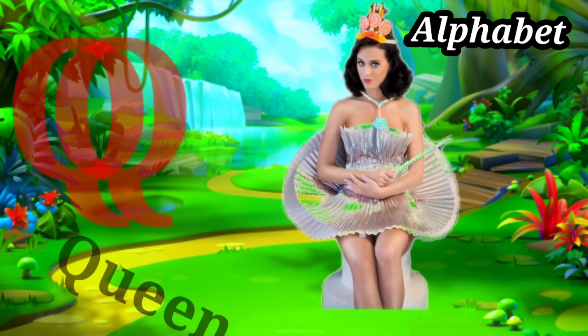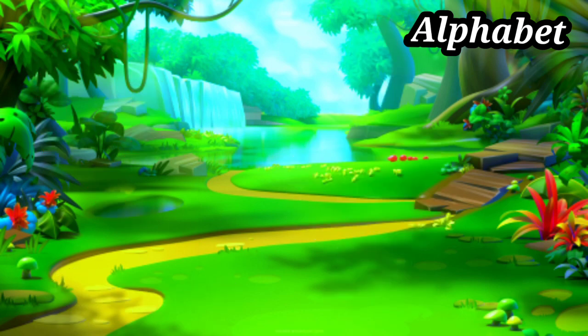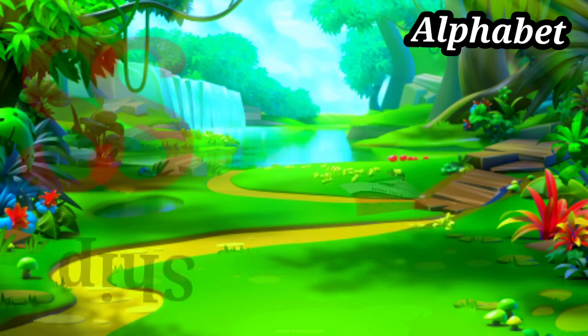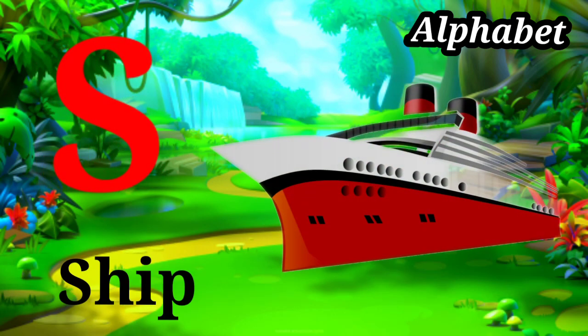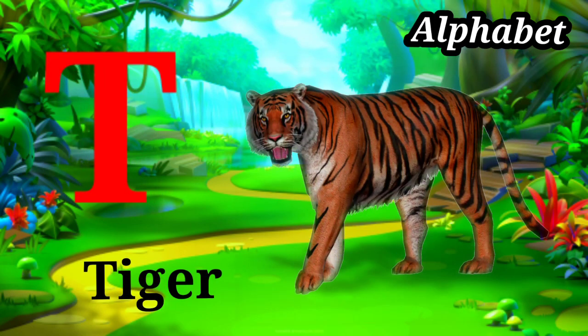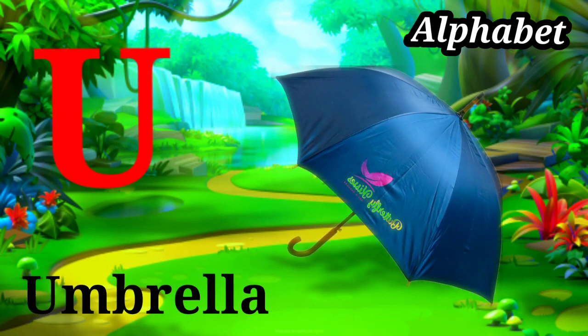Q for queen, R for rose, S for sheep, T for tiger, U for umbrella.